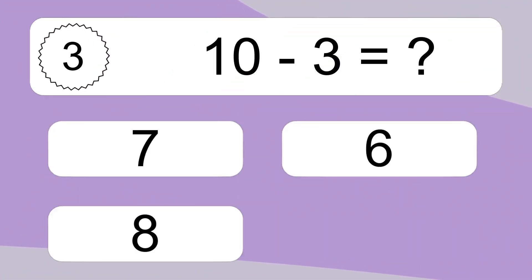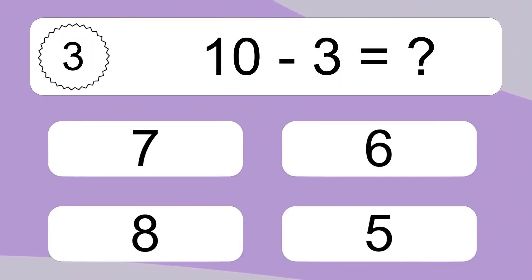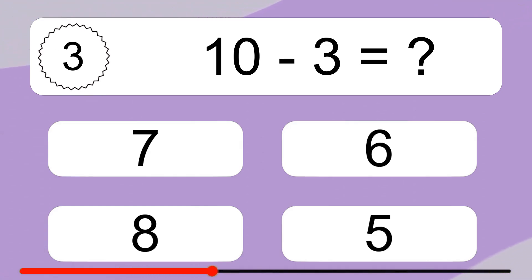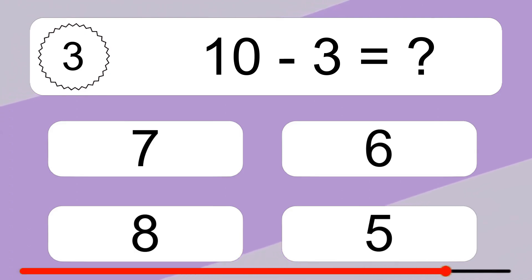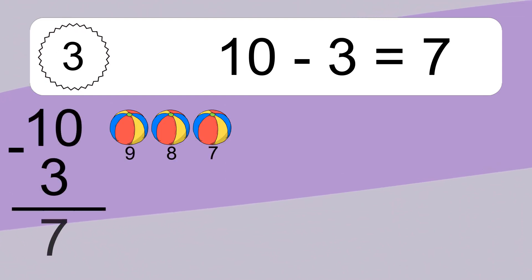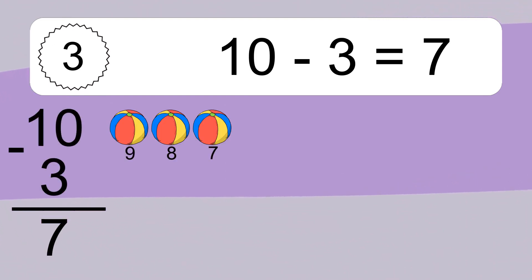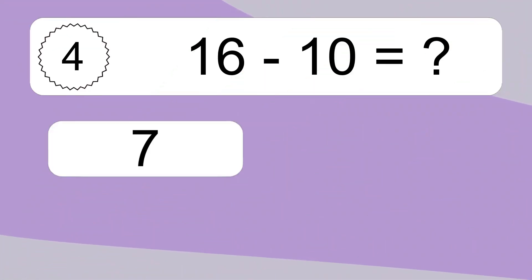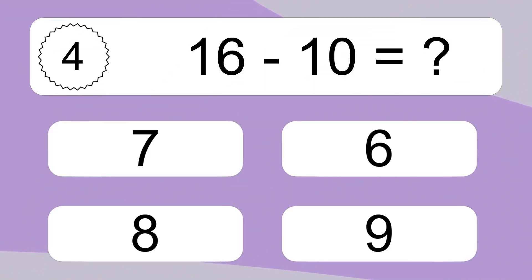15 minus 3 equals what? 10 minus 3 equals 7. Let's count it: 9, 8, 7.